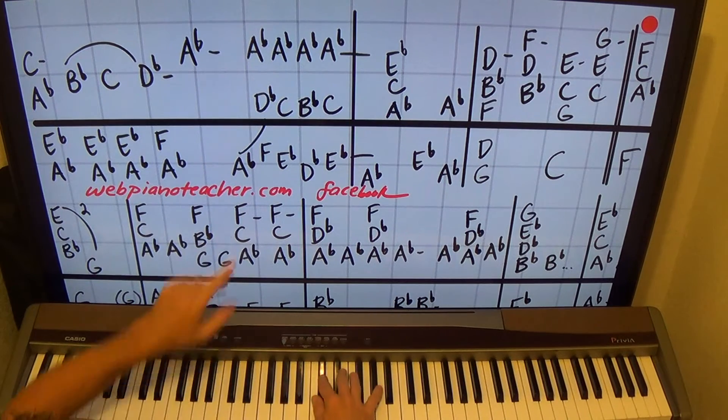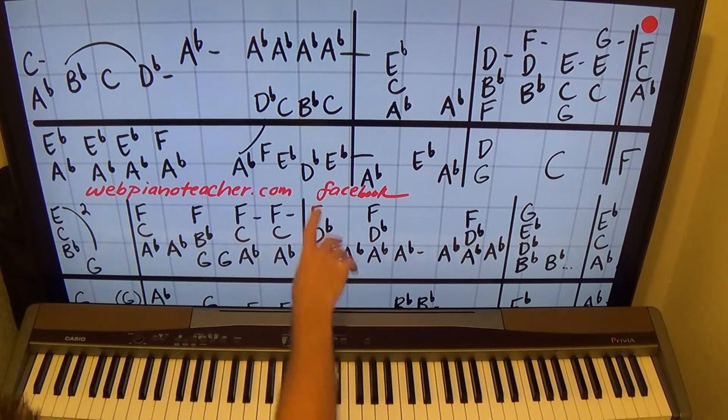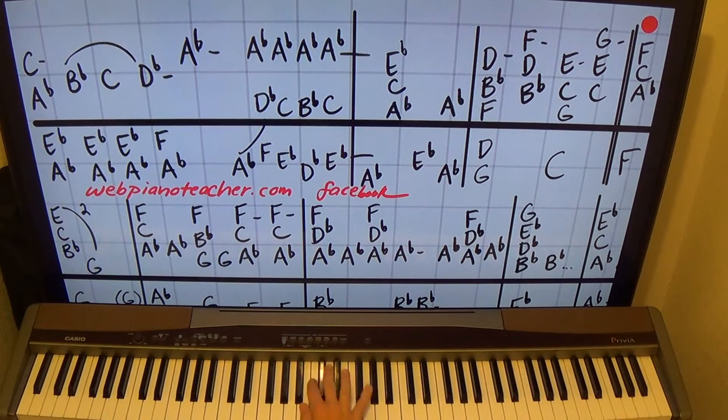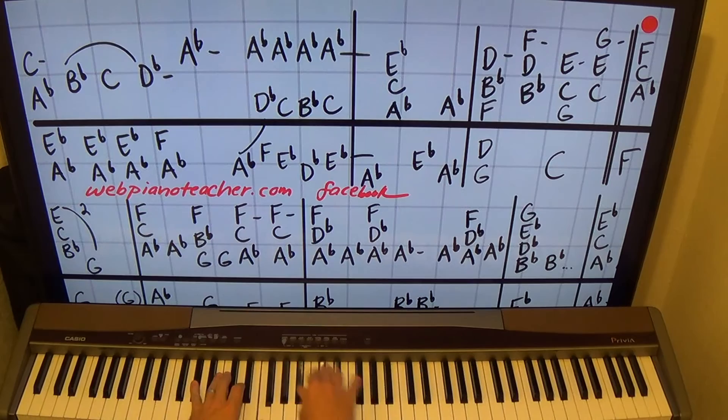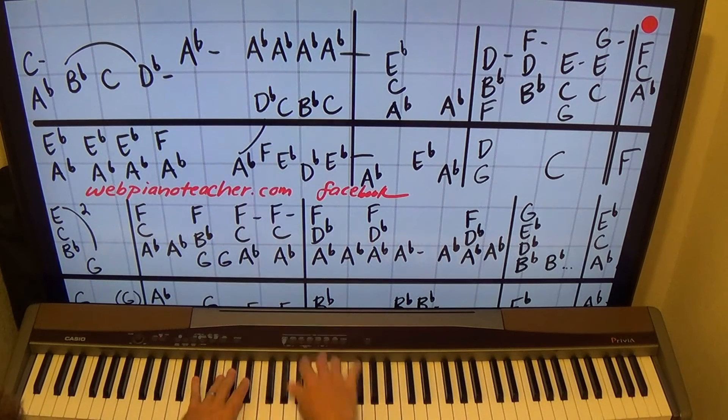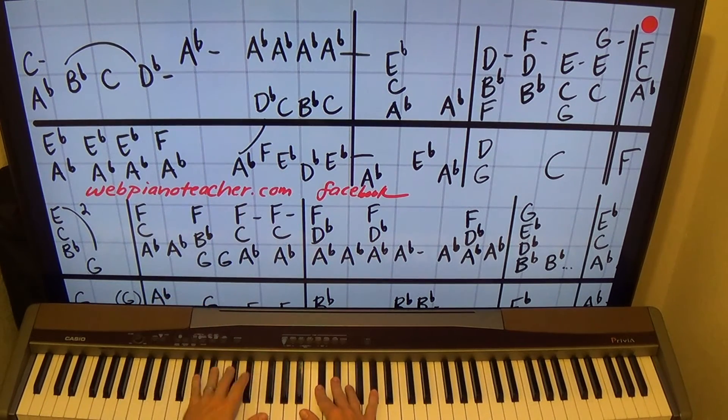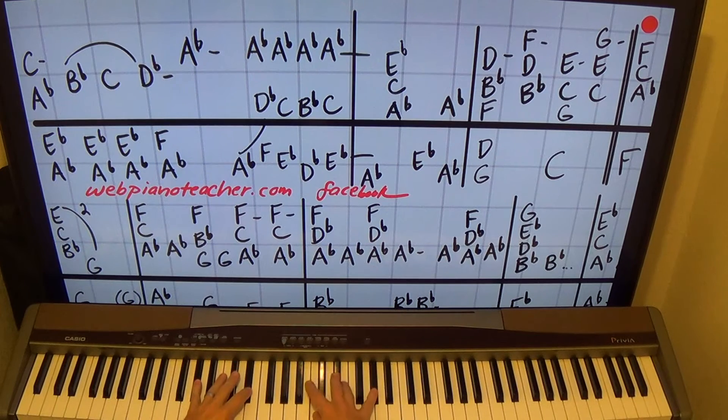So we use thumb, thumb on that C, B-flat. Now the left hand will play A-flat first, but kind of connect in with the rest of it: F, and you do F with your thumb, E-flat, D-flat, B-flat.